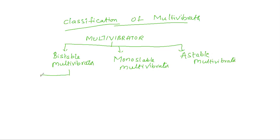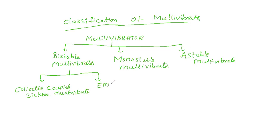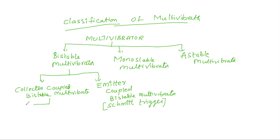The bistable multivibrator is again classified into two types: collector coupled bistable multivibrator and emitter coupled bistable multivibrator. The emitter coupled bistable multivibrator is also called as a Schmitt trigger. The collector coupled bistable multivibrator is further classified into two types: one is fixed bias and another one is self-bias.